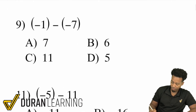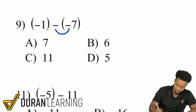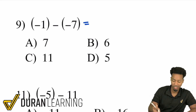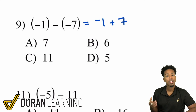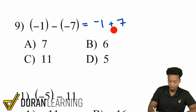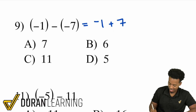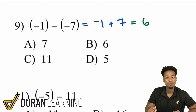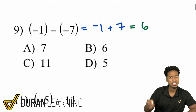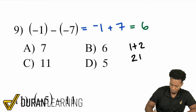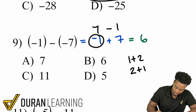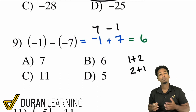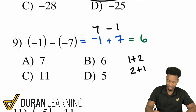Number 9: negative 1 minus negative 7. When you have a minus negative, turn that into a positive — a double negative is a positive. So we have negative 1 plus 7. You have a negative and a positive being added, so take the difference and keep the sign of the bigger number. The 7 is bigger, so the result is positive. 7 minus 1 is 6, so the answer is positive 6. Also, negative 1 plus 7 is the same as 7 minus 1 by the commutative property — bring the sign with the number.